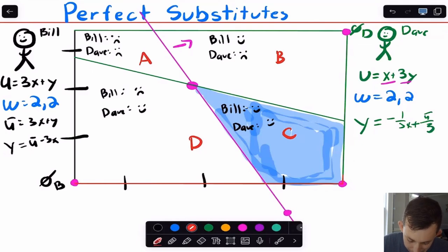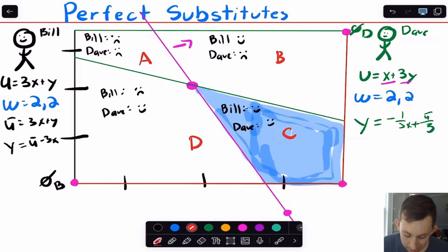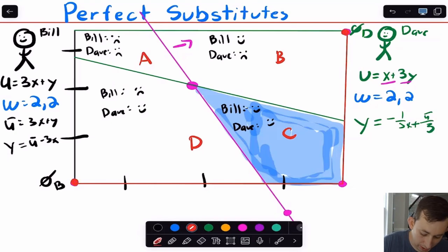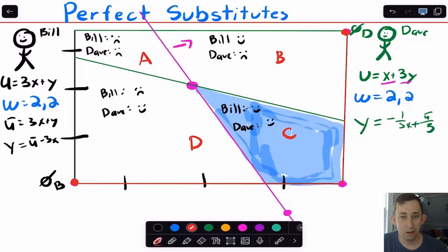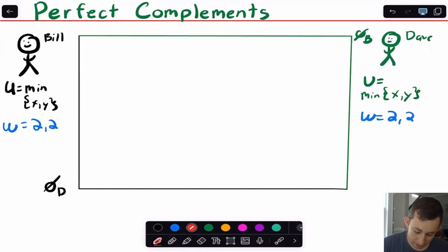The same thing is true for Bill: if Bill has all the X's, no matter how many Y's you offer him, he won't trade because holding all the X's is better than any Y compensation. So the Pareto optimal set is the origins and the two edges — the bottom edge where Bill has all X's, and the left edge where Dave has all Y's, shown in red.